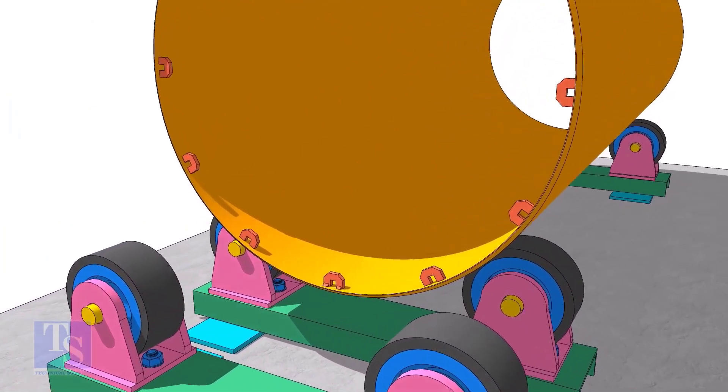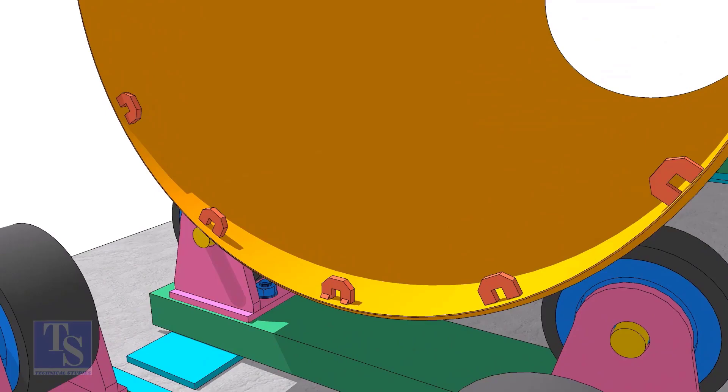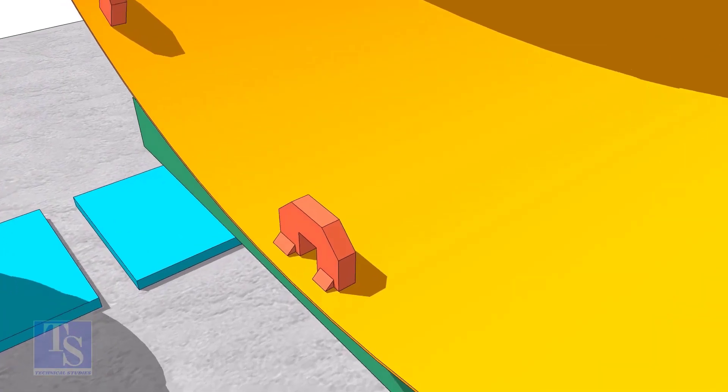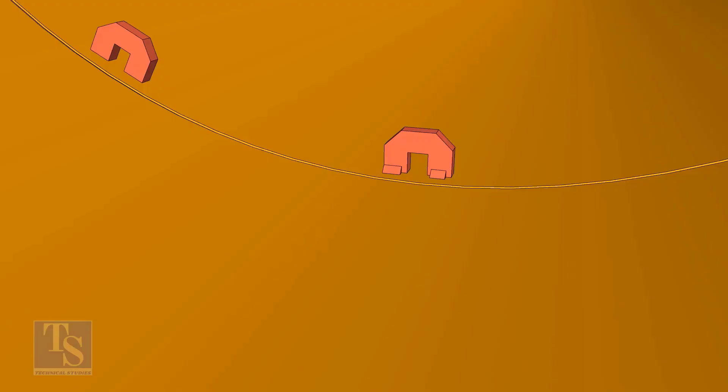TAC weld the seas on one shell near the end as shown. If the thickness of the pipe is less, you may need more seas. Don't weld two big tacks. Always TAC weld from the wedge side only.